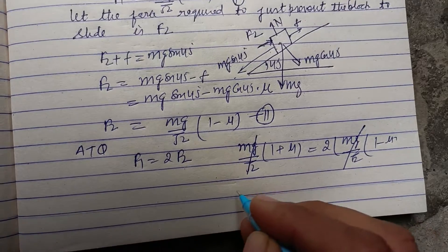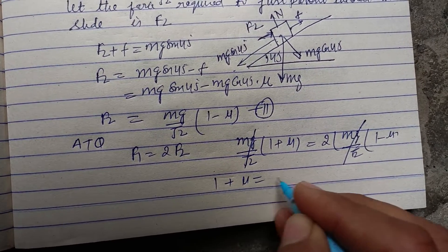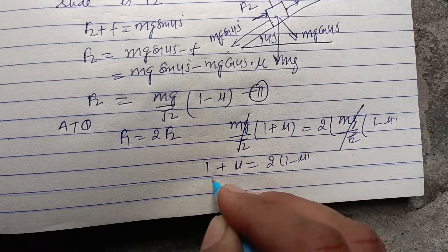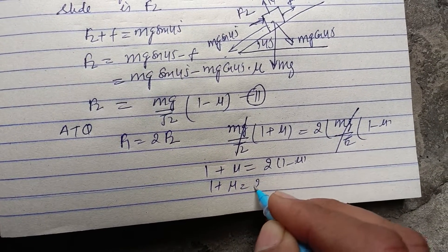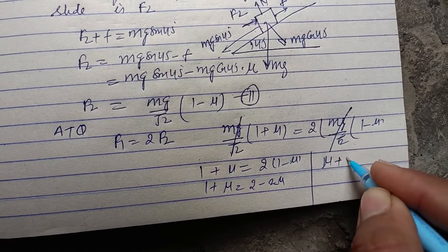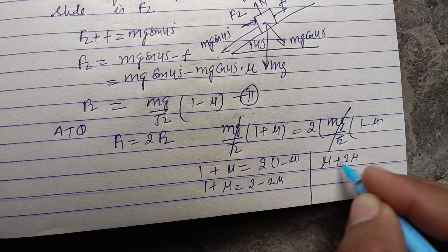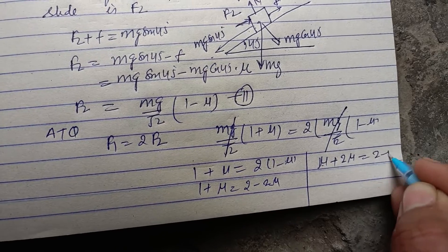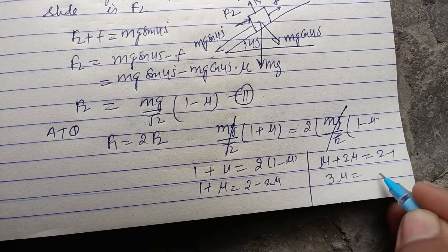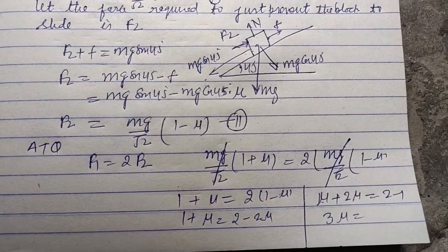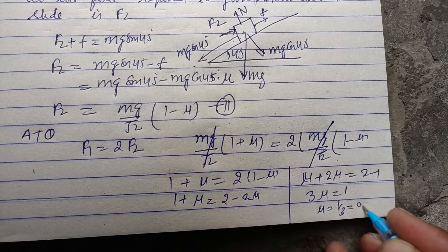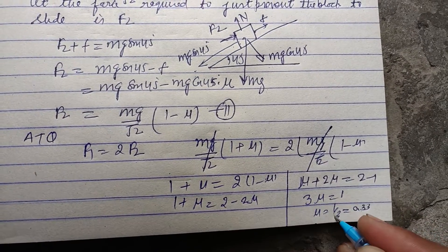Mg upon root 2 cancels, we got 1 plus mu equals 2 times 1 minus mu. So 2 minus 2 mu. From here we bring mu towards 1 direction, so mu plus 2 mu equals 2 minus 1. 3 mu equals 1. Therefore mu equals 1 by 3, this is 0.33.